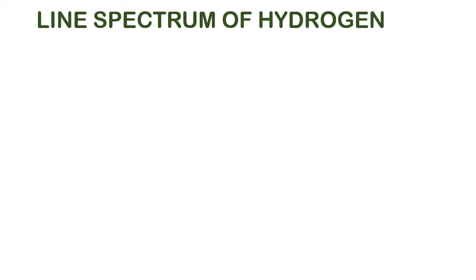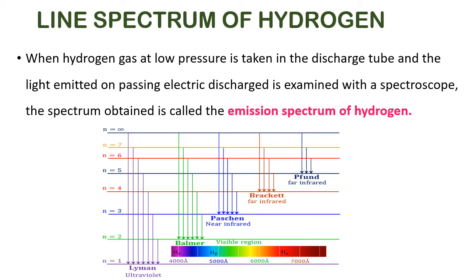Now we go to the emission spectrum of hydrogen, also called the line spectrum of hydrogen. It is called a line spectrum because whenever we pass energy into the excited hydrogen sample, it gives out energy which is seen as lines. When hydrogen gas at low pressure is taken in a discharge tube with high voltage, the light emitted on passing electric discharge is examined by the spectroscope. The spectrum obtained is called the emission spectrum of hydrogen or the line spectrum of hydrogen.